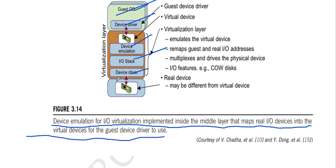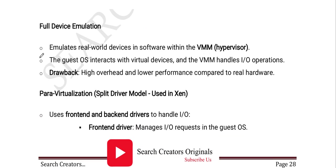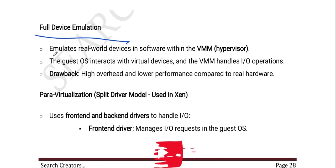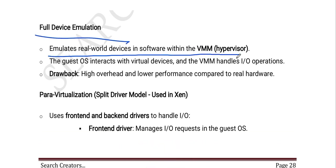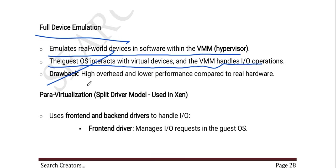Next is full device emulation, which emulates real-world devices in software within the VMM/hypervisor. The guest OS interacts with the virtual device and the VMM handles I/O operations. The drawback of full device emulation is high overhead and lower performance compared to real hardware.